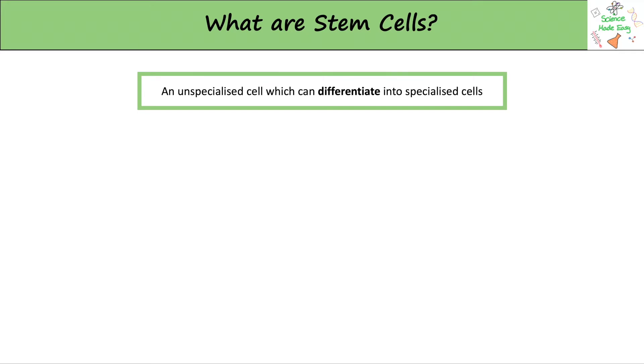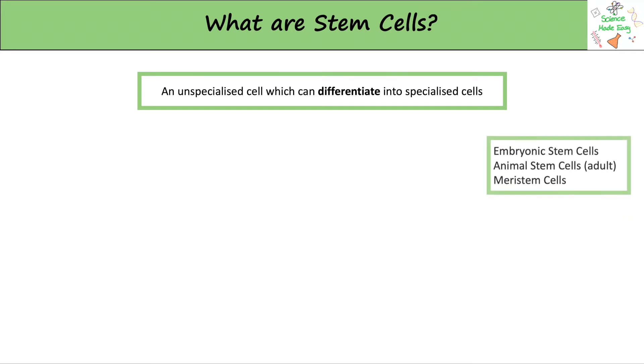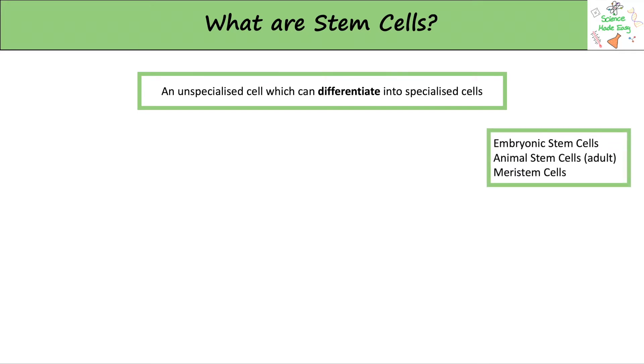There are three types of stem cells: embryonic stem cells, animal stem cells, and meristem cells.